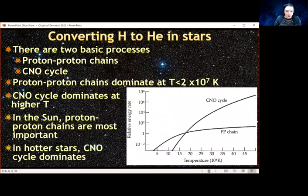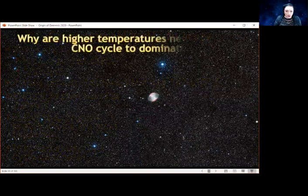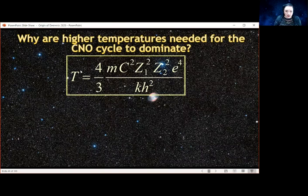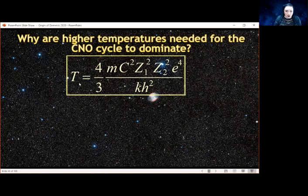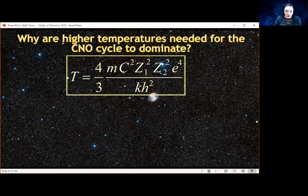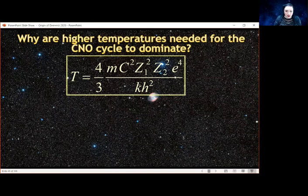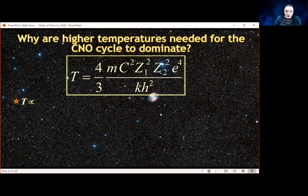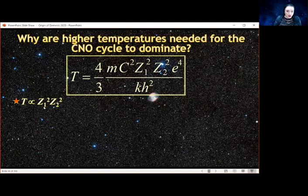We can understand this in terms of the repulsion. Why are the temperatures higher? We have this equation that relates the temperature that you need to stick atoms together, to get them close enough that the strong force comes into play. T equals 4 times m C squared times Z1 Z2 e squared over 3 times k h squared, where M is the mass of a proton, C is just a constant, K is the Boltzmann constant, H is the Planck constant, E is the charge on a proton. The only variables are these Zs. Z1 and Z2 are the atomic numbers, how many protons each one has.